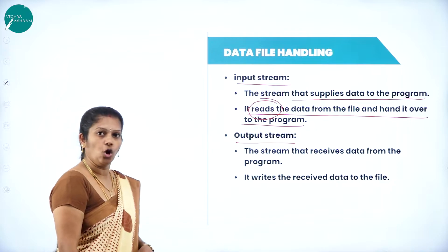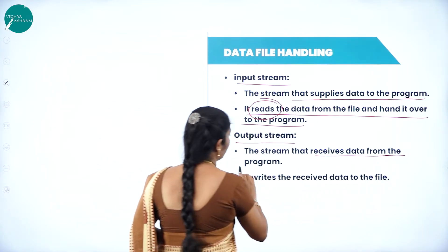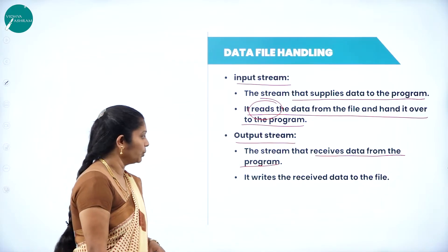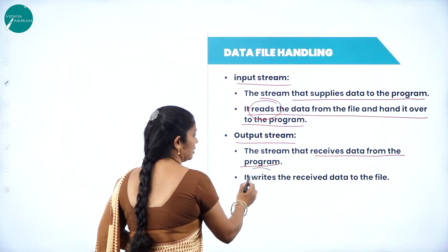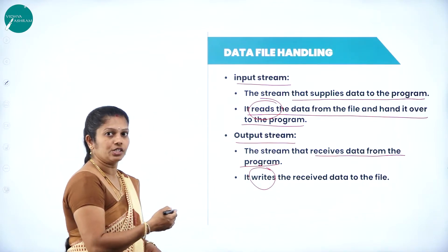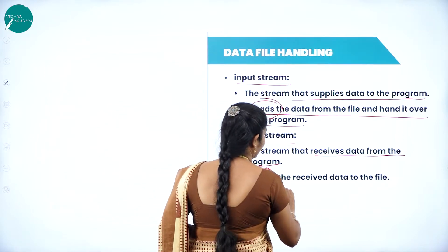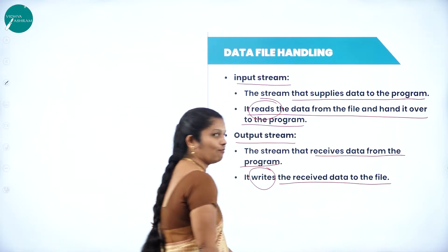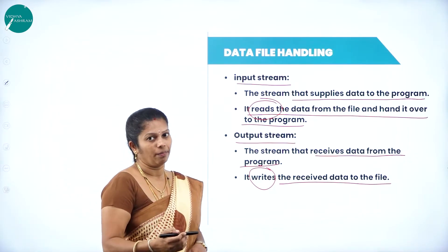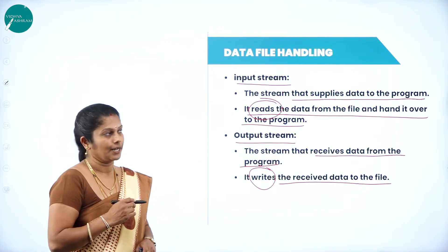An output stream is a stream that receives data from the program. When we are reading the result, the computer performs a write operation. It writes the received data to the file. In summary, input stream reads and output stream writes.